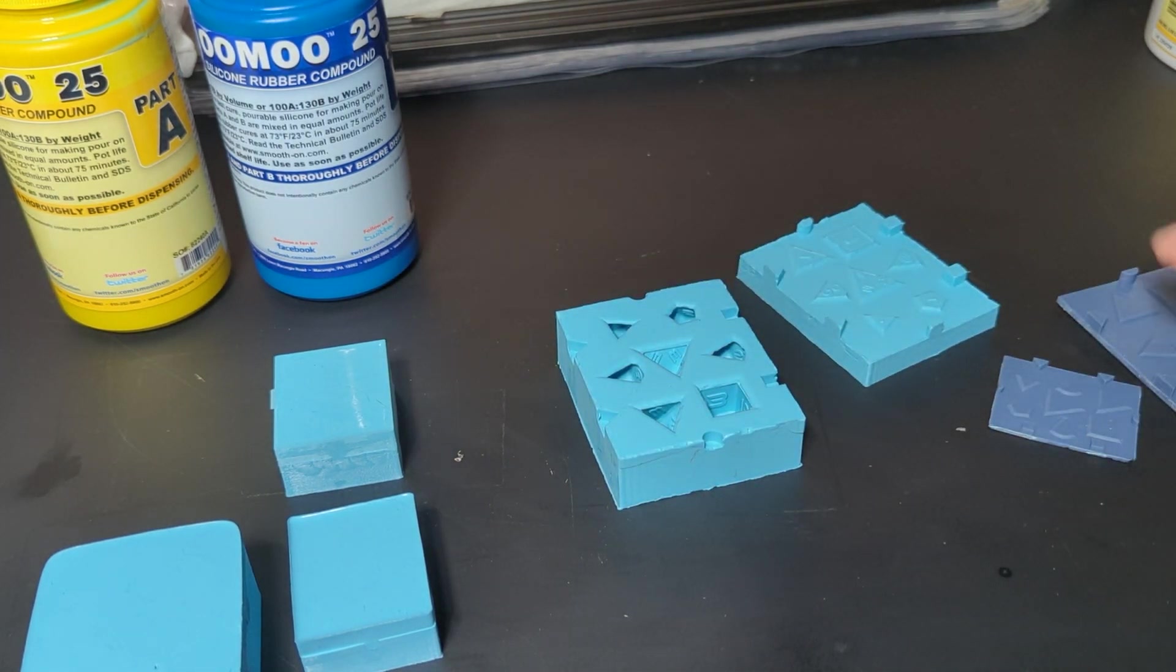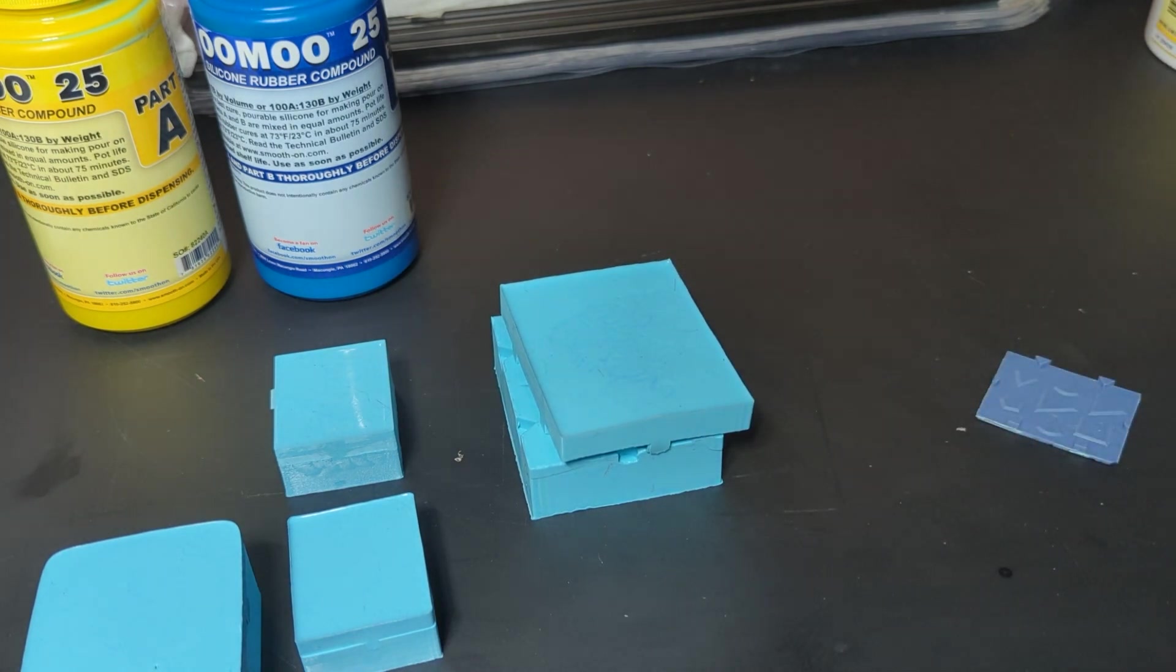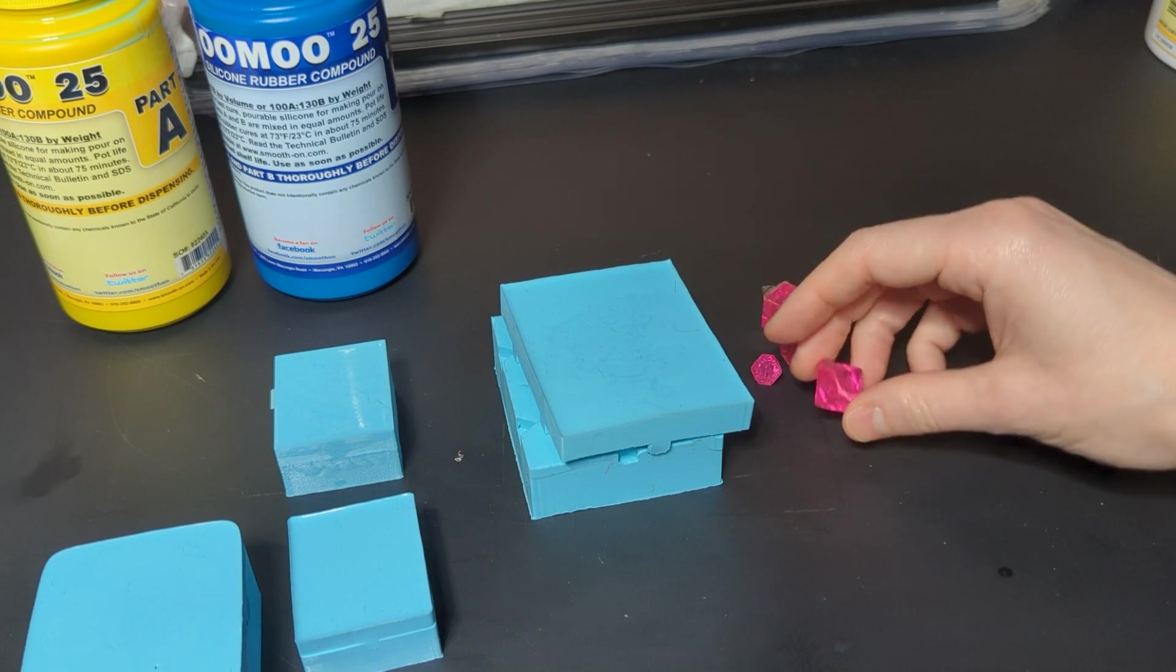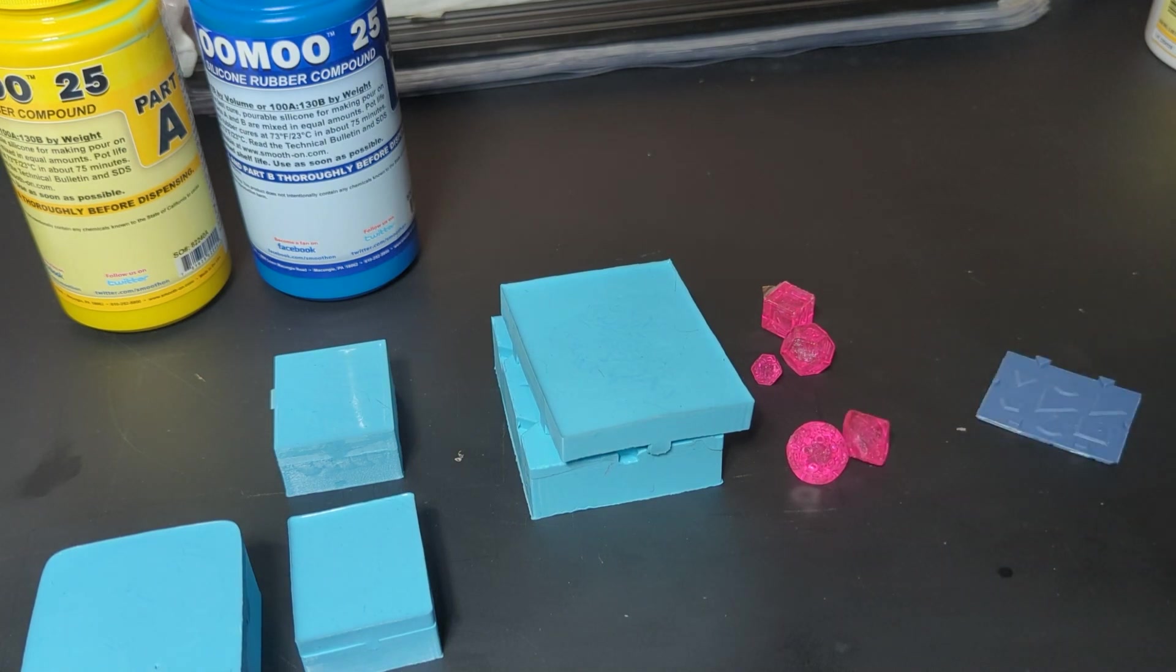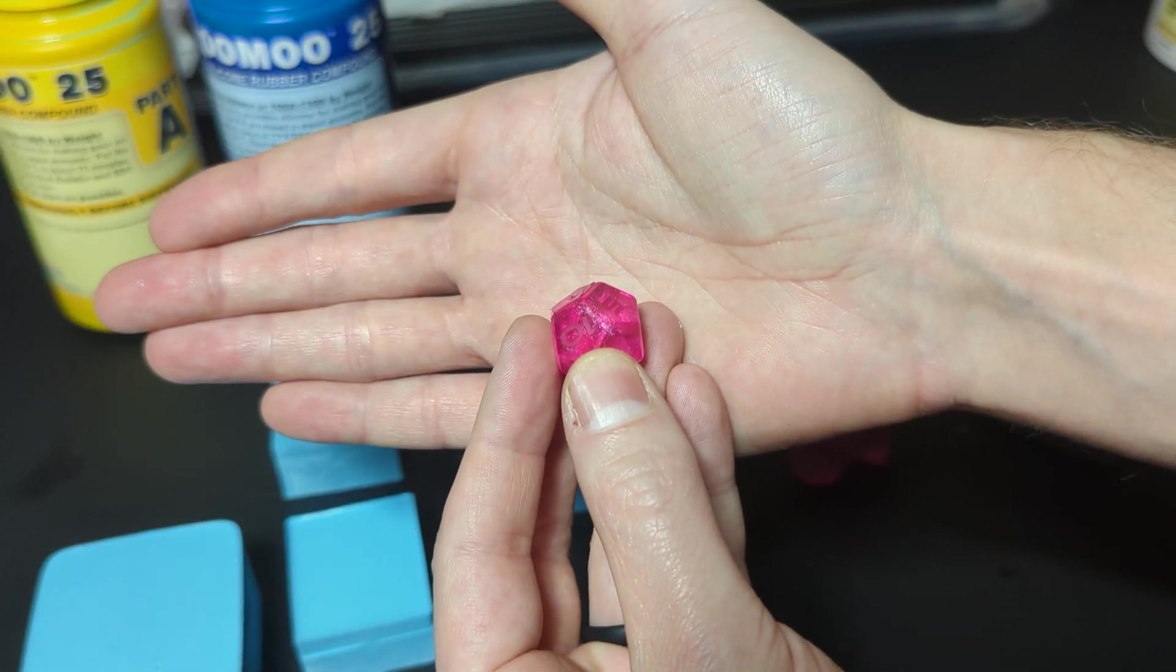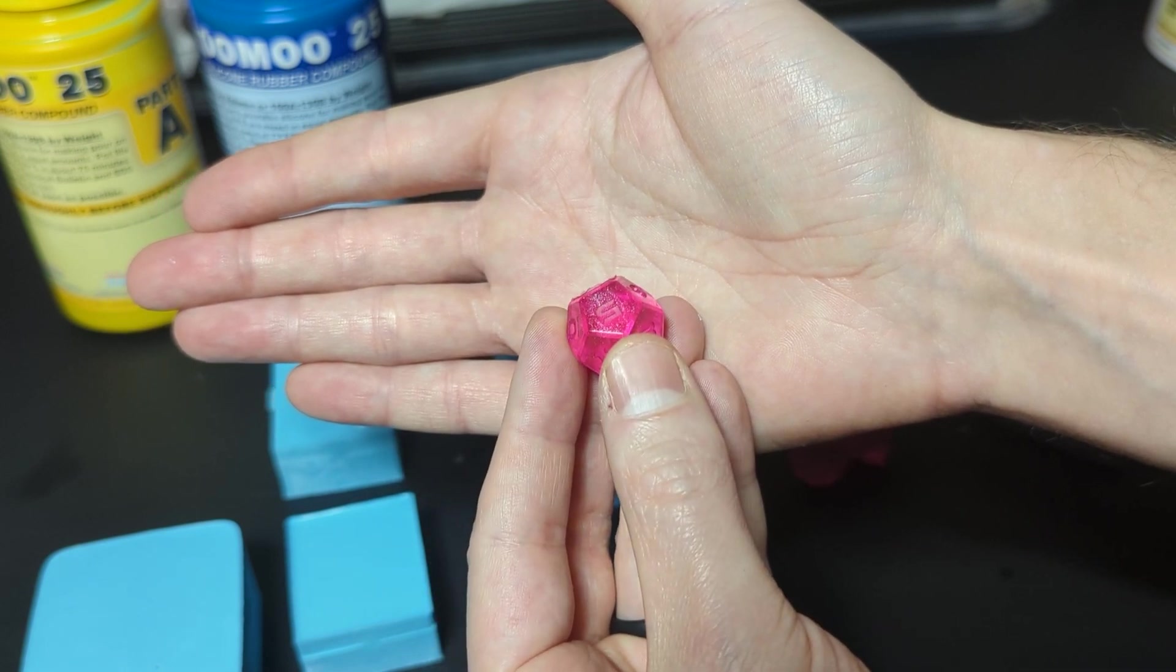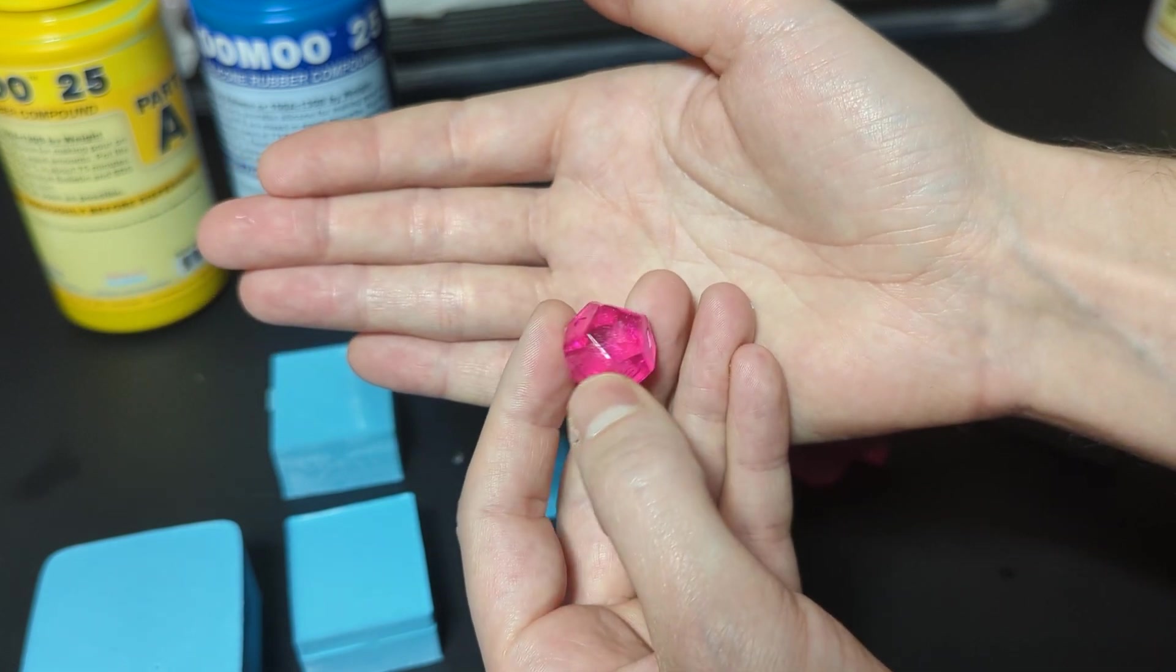Typically you want to use tin cure for anything that you 3D print with photopolymer resin. Now I'll show you what happened with this. Oddly, actually when I made some dice out of that they never actually cured right. They're very sticky still and it's been a few weeks since I've done this.